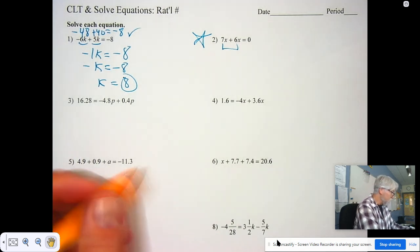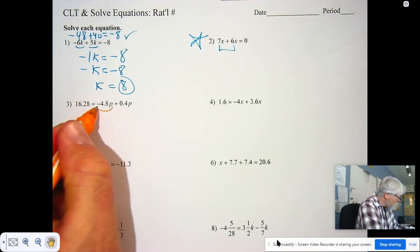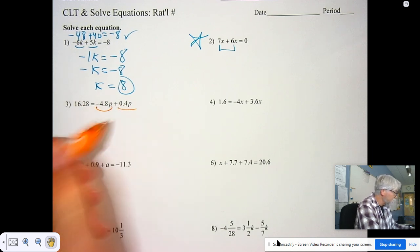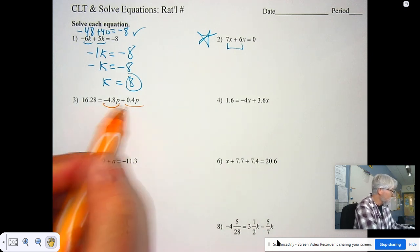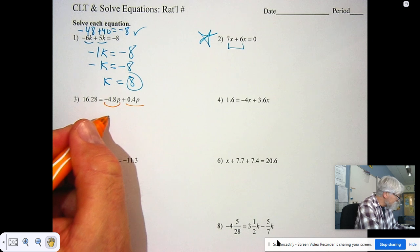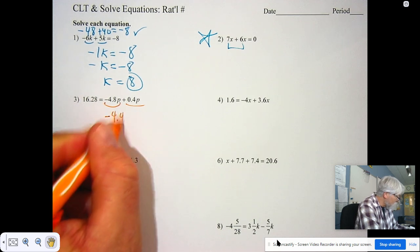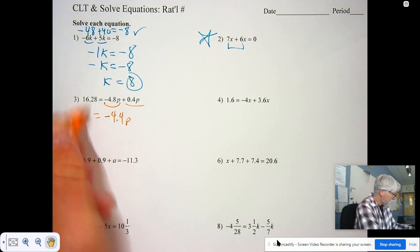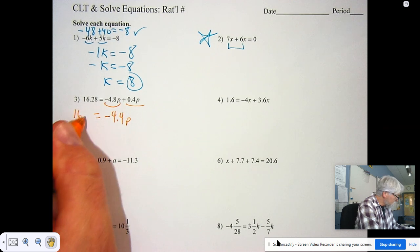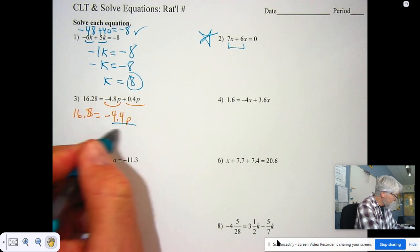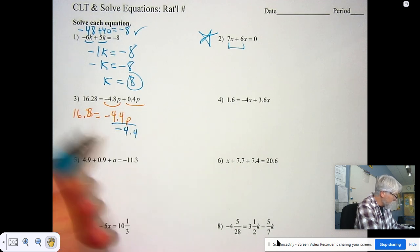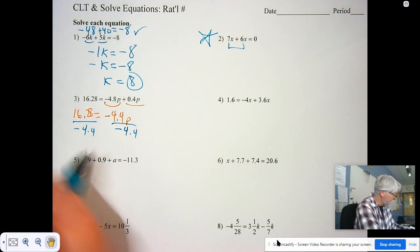Okay, let's try number three. Now, our negative 4.8 P and our positive 0.4 P are on the right side of the equal sign. It doesn't matter. We still combine them. Negative 4.8 and a positive 0.4 is negative 4.4 P. Negative 4.4 P equals 16.28. To solve that now, I have to divide by negative 4.4. That's the coefficient of P.